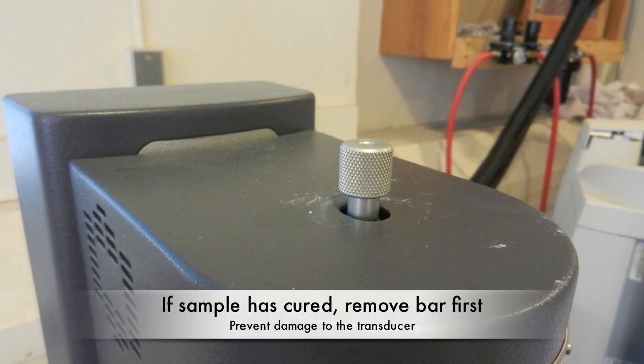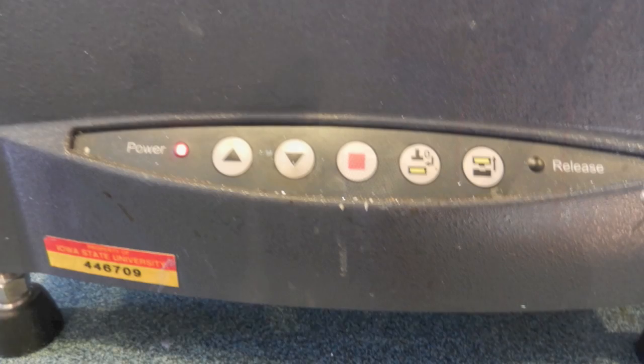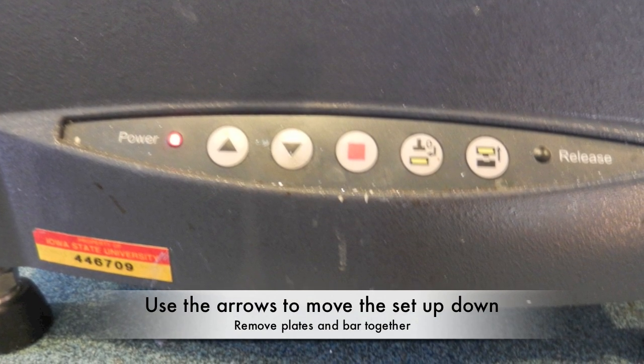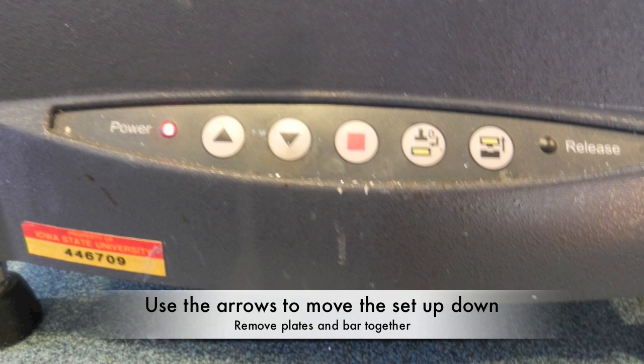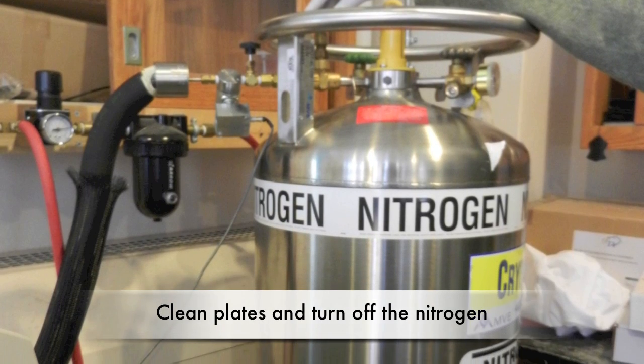For samples that have cured, loosen the screw for the bar first to prevent damage to the transducer. Use the arrows to move the instrument down. Remove the plates and bar together and pull the plates free if possible. Clean the plates for future use. Finally, turn off the liquid nitrogen.